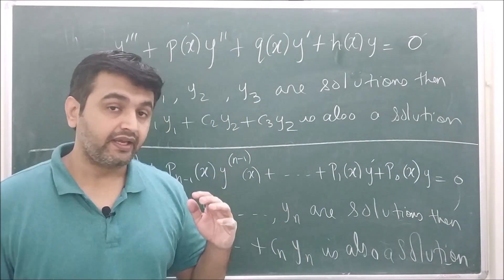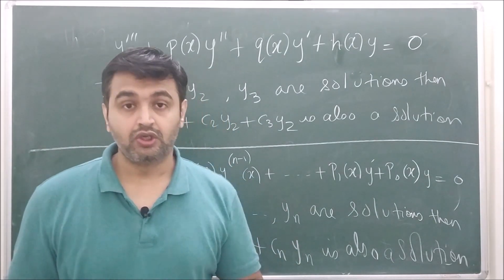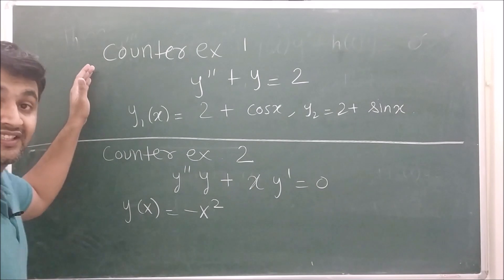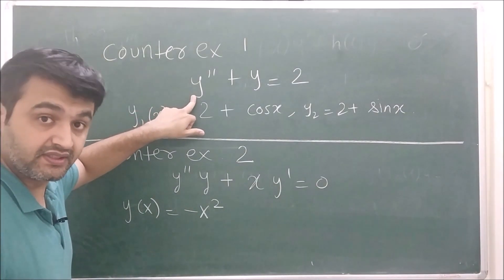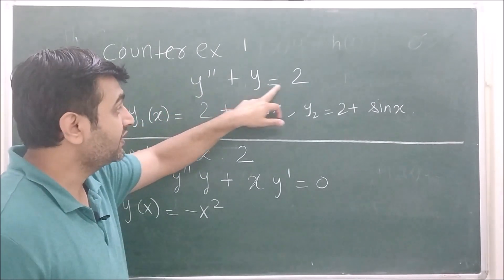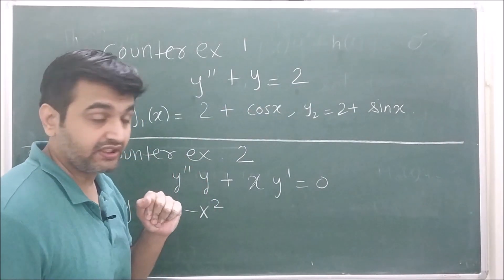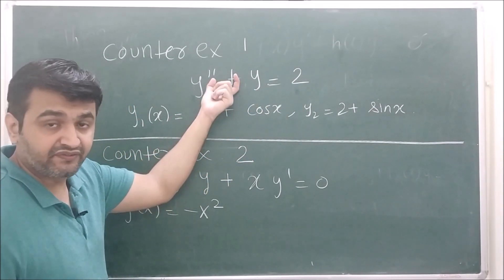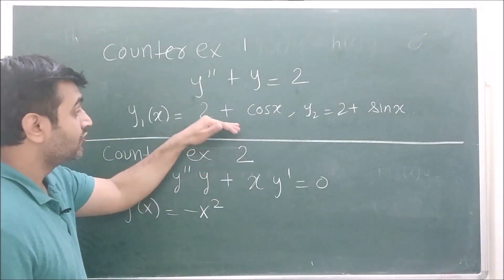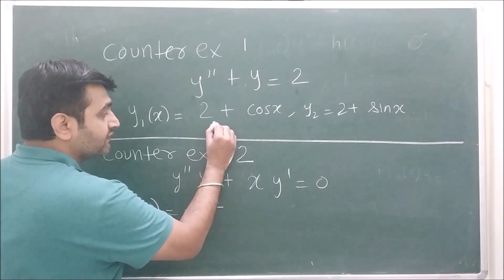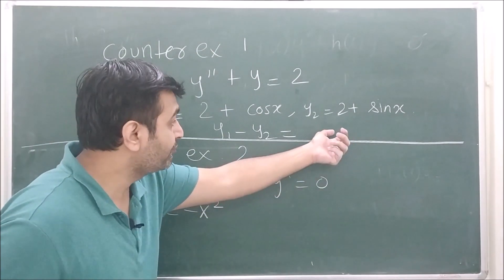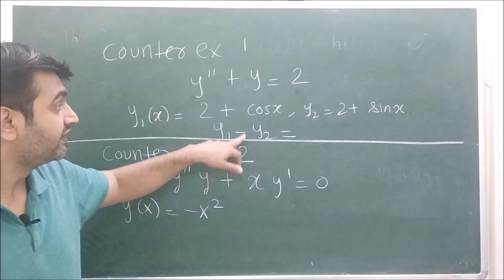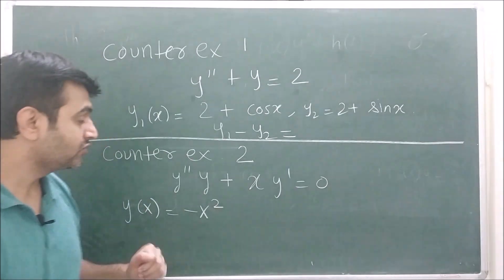I stressed that both linear and homogeneous are required; if either condition is violated the theorem is not true. Counter-example 1: take a second order linear but non-homogeneous differential equation. One can verify that y1 and y2 are both solutions by substituting and checking they satisfy the equation. However, if you take y1 − y2 = cos x − sin x and substitute it, it does not satisfy the differential equation. So the linear combination of solutions need not be a solution, showing homogeneity is required.